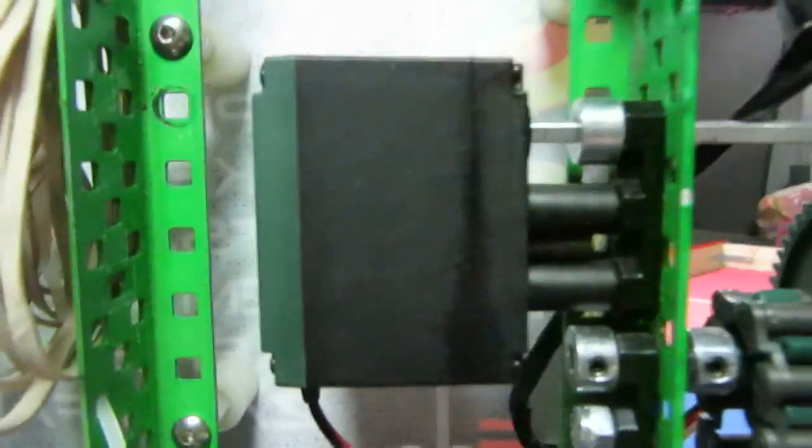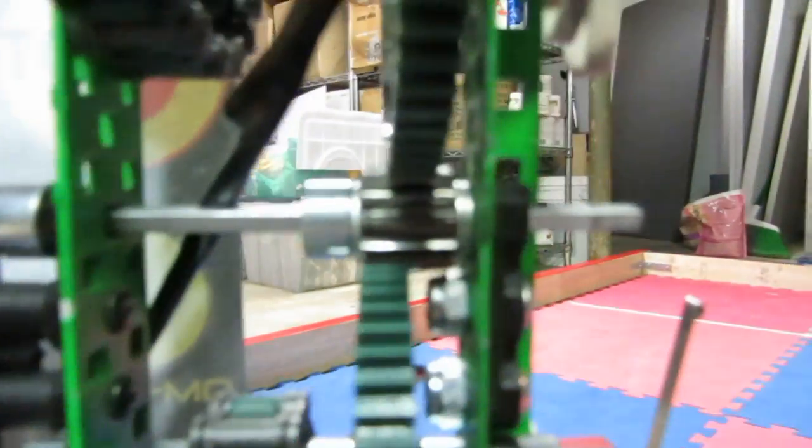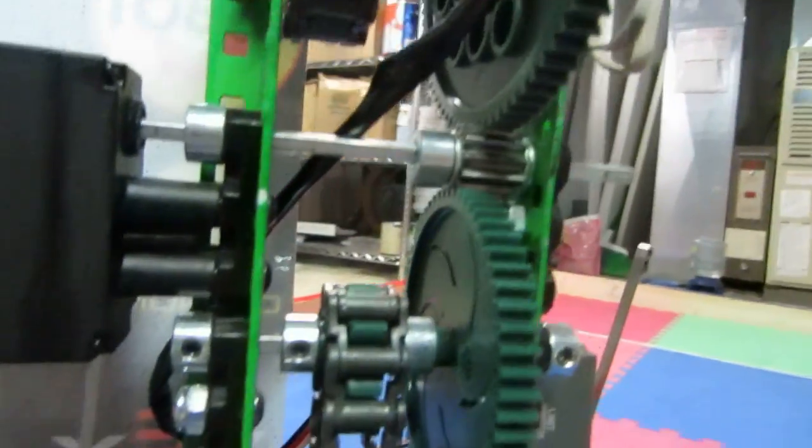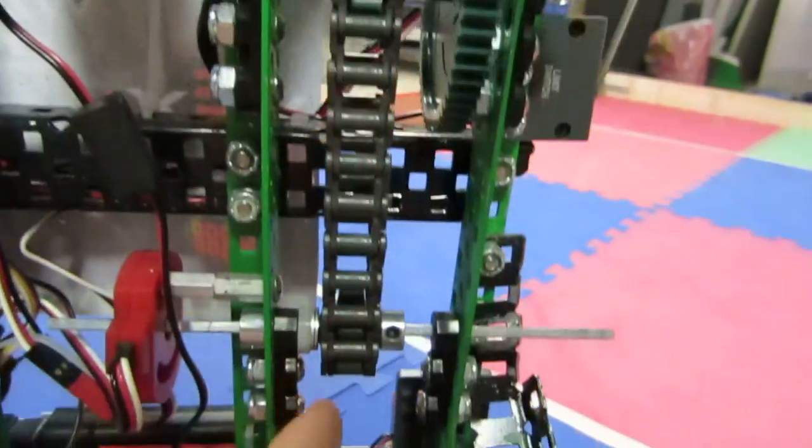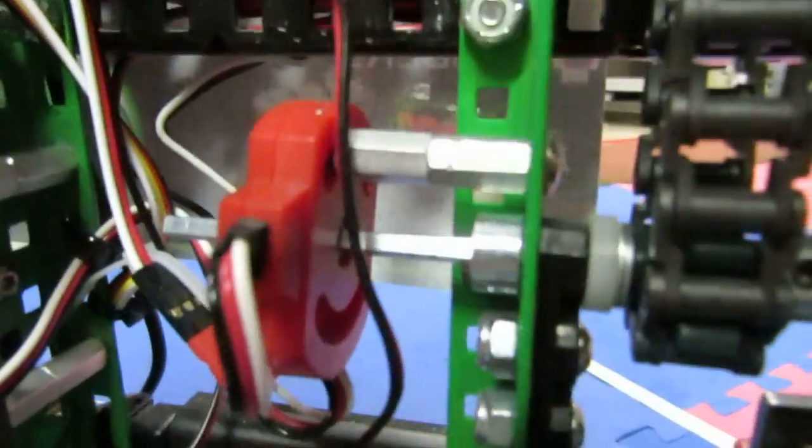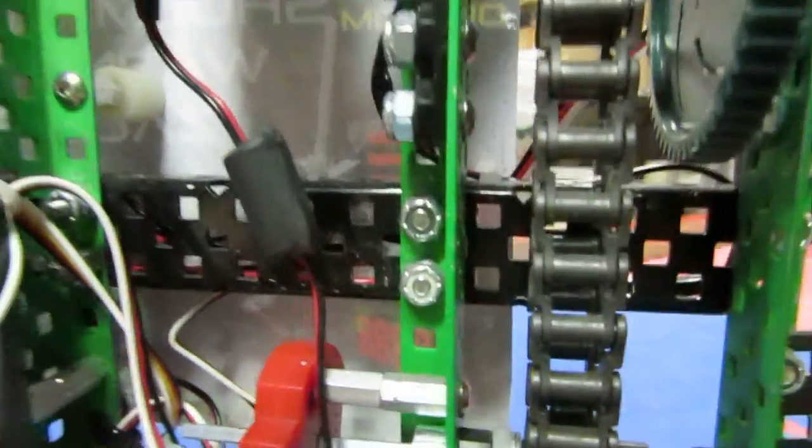All this down here, we have a 393 motor, 12 tooth gear powering an 84 tooth at 7 to 1 ratio. And then all this stuff here is just to power our potentiometer here.